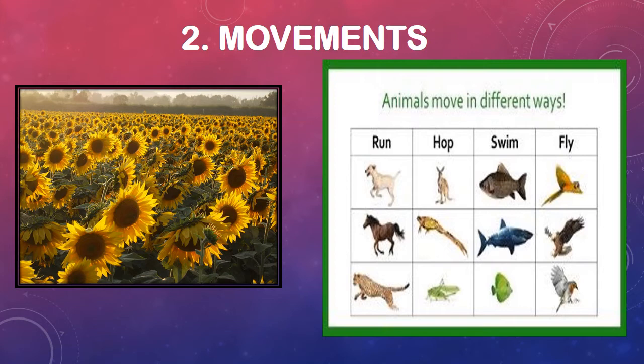Some animals swim, like different fish. Some animals fly, like birds — parrots, eagles, etc. Animals mostly move from one place to another in search of food, water, and shelter, or to avoid danger. This type of movement is called locomotion.